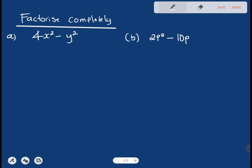And at the same time, 4 is a square, x squared is a square, and y squared is a square. So, we're going to use the difference of two squares.